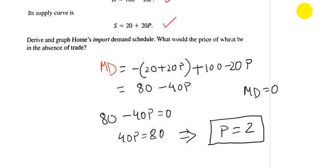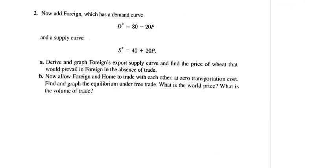Let's see another part of this question. Now if we add another country, which is usually known as Foreign, and has a demand curve and supply curve as given in the question, we need to derive the foreign export supply curve and find the price of wheat that would prevail.